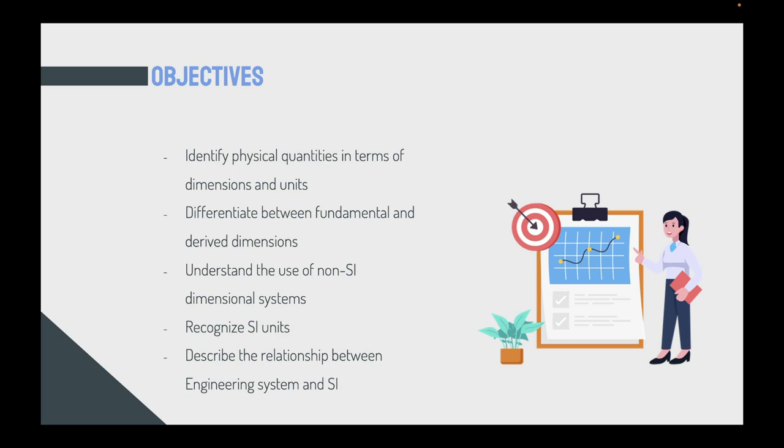The objectives for this chapter would be: first, we will try to identify the physical quantities in terms of dimensions and units. Then we will try to differentiate between the fundamental and the derived dimensions. We'll try to understand the use of the non-SI dimensional systems, and we will try to learn how to recognize the SI units. As well, we will talk a little bit about how to describe the relationship between the engineering system and the SI system.